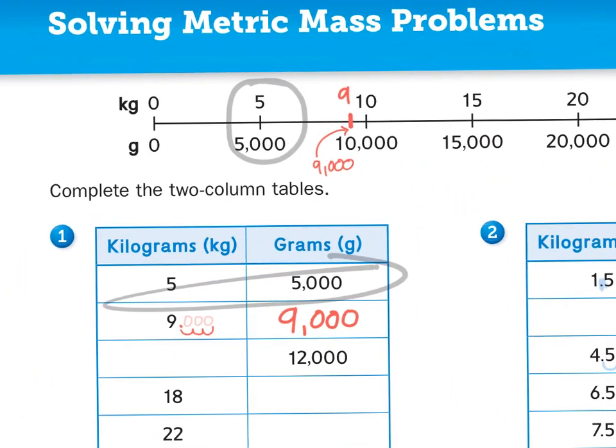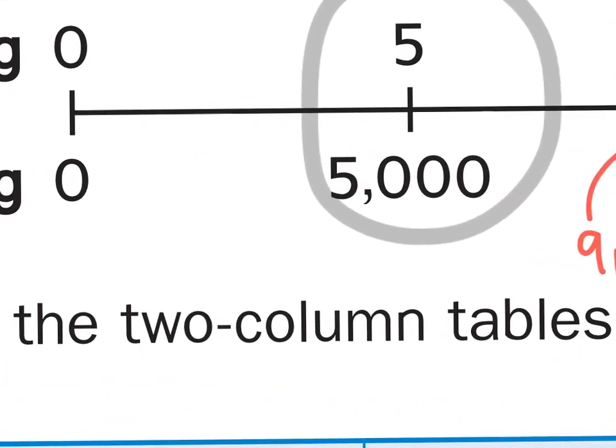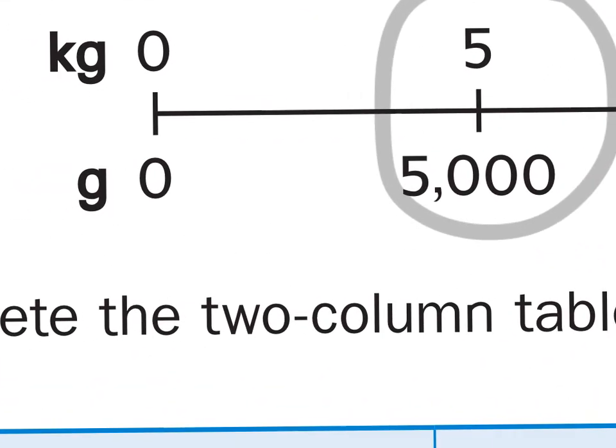And again, if we were to look at that on our number line right up here. One, two, three, four. So four kilograms would be up here. 4.5 would be somewhere in between. Not quite five, but more than four. 4.5 would live right there. That's 4,500 grams.